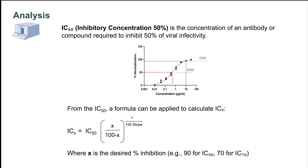The most important information derived from a neutralization curve is the IC50, which is the concentration of test article at which 50% of neutralization is reached. Using the hill slope and the IC50 value, it is possible, with a simple formula, to calculate the concentration of sample corresponding to any other percentage neutralization.